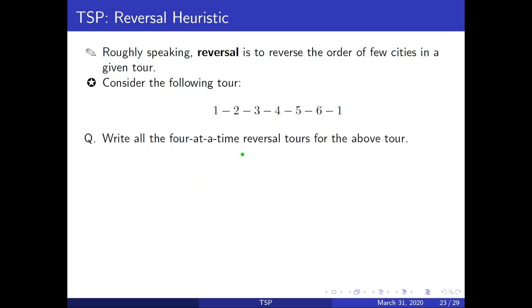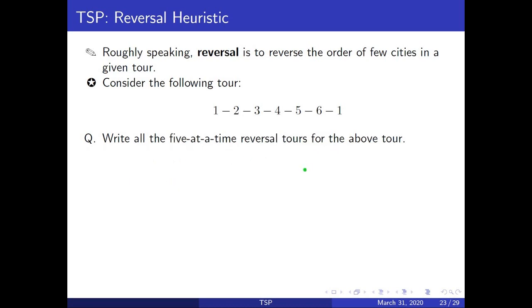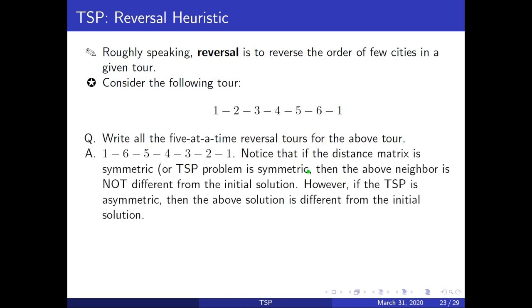Now let us write all the four-at-a-time reversals. Here we will have these two four-at-a-time reversals. For the five-at-a-time reversal, we will have this candidate.